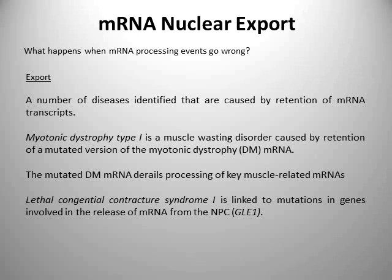There are also a number of diseases that arise due to an inability to correctly export mRNA. Several mutations give rise to myotonic dystrophy type 1, a type of myotonic dystrophy that arises due to mutated versions of dystrophin mRNA — these mutated mRNAs are retained in the nucleus and then start affecting how other splice variants of dystrophin are produced. There are also rare diseases linked to mutations in genes producing proteins involved in releasing mRNA from the nuclear pore complex. The protein GLE1 is essential for releasing mRNA from the nuclear pore complex at the end of mRNA export, and if you mutate the gene it can lead to a rare disorder called lethal congenital contracture syndrome 1 — another example of how human disease can directly arise from errors in these key molecular proteins.